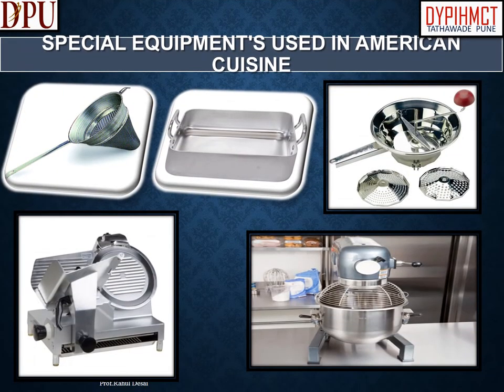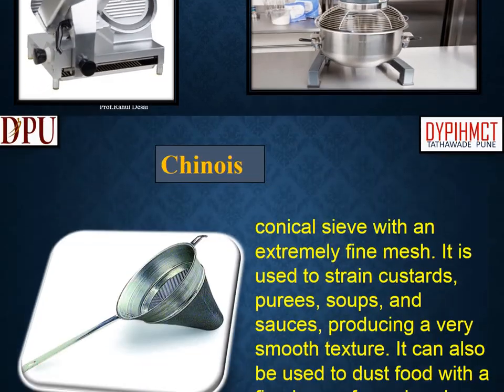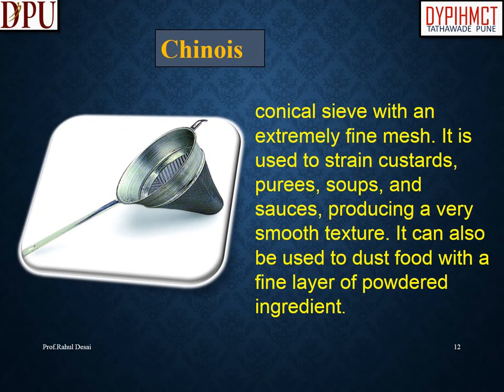Special equipment used in American cuisine: A chinois is a conical sieve with an extremely fine mesh. It is used to strain custards, purees, soups, and sauces, producing a very smooth texture. It can also be used to dust food with a fine layer of powdered ingredient.